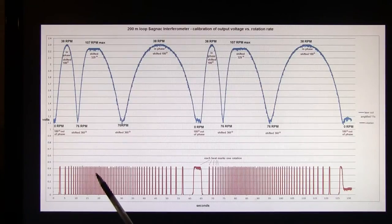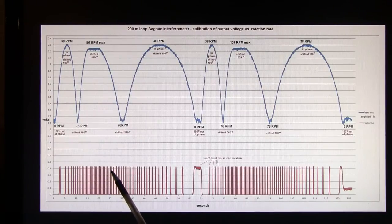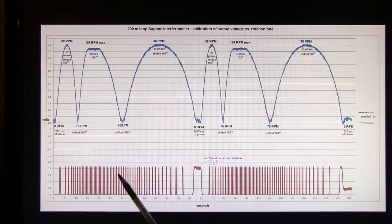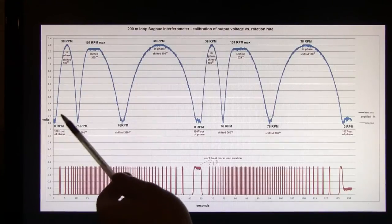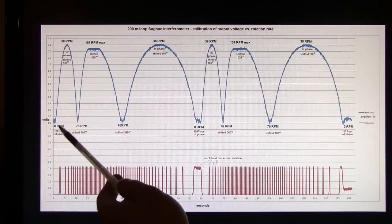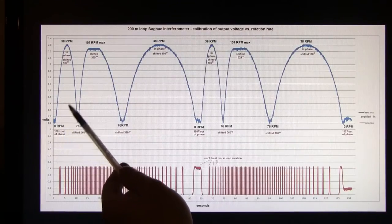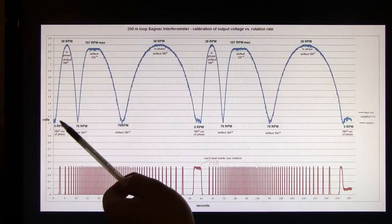So each one of these red marks marks every time that the rotor passes the same point around 360 degrees. So these mark out each rotation along our little test run. Now what we've got shown in the blue is the voltage of the photodiode coming out of our interferometer. It's amplified about 11 times.